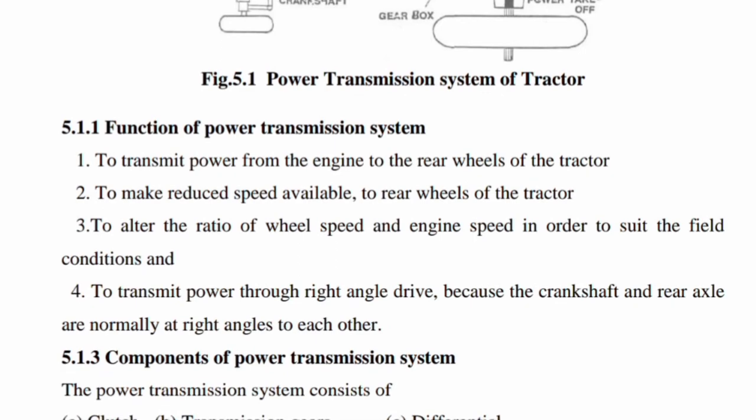Functions of the power transmission system: first, to transmit power from the engine to the rear wheels of the tractor. Second, to alter the ratio of wheel speed to engine speed in order to suit different field conditions. Third, to transmit power through a right-angle drive, because the crankshaft and rear axle are normally at right angles to each other.